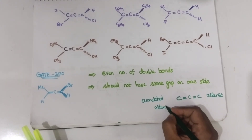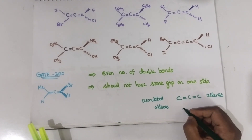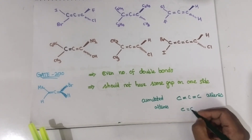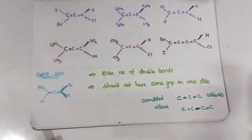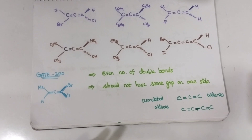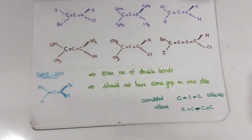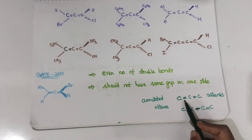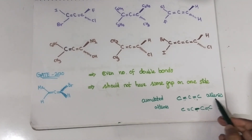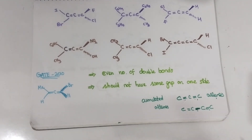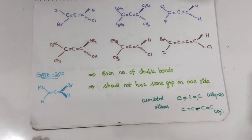If the double bond is present in alternate position — double bond, single bond, double bond — it is known as conjugated diene. If the two double bonds are present continuously, it is known as allenes or accumulated alkenes. If they are present in an alternate manner, double bond, single bond, then it is known as conjugated diene or conjugated polyenes.